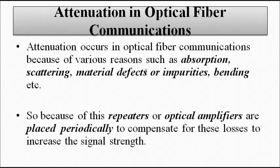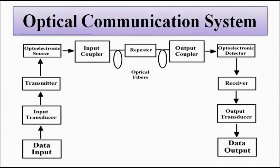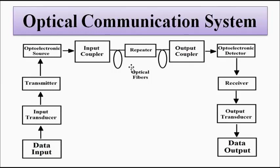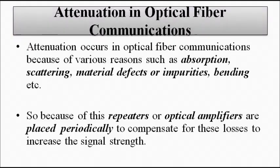We have to come up with a way to compensate for the lost energy so that the signal can recover and cover the remaining distance up to the destination. Because of this, repeaters and optical amplifiers are used. There are many repeaters placed at regular intervals at fixed points between the source and destination to compensate for lost energy and to amplify the light signals.